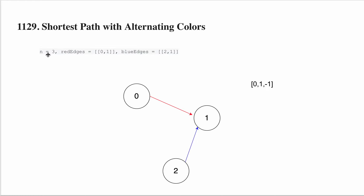So in this problem, you are given the number of edges — 3 in this particular case. You are given the red edges and the blue edges. You are given a red edge that will travel from 0 to 1 and a blue edge from 2 to 1. You have to find what is the minimum number of steps that you can travel from 0 to that particular place.